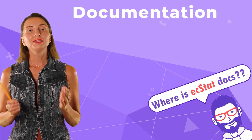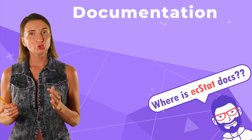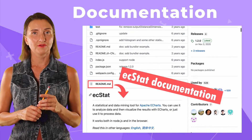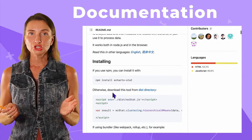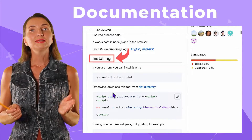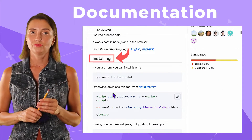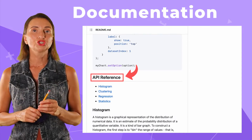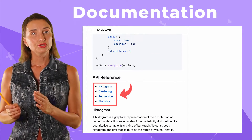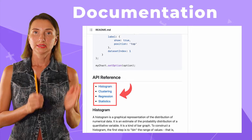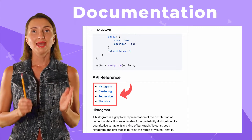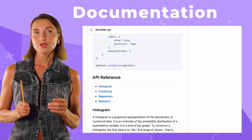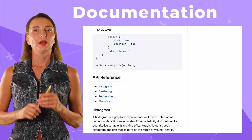The documentation for the ECStat tool can be found on GitHub in the README file. You can skip the installation part since it has already been done for you. Then, in the API reference chapter, you can see histogram, clustering, regression, and statistics sections. Let's review them one by one.